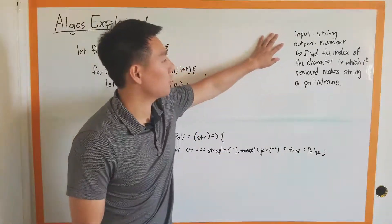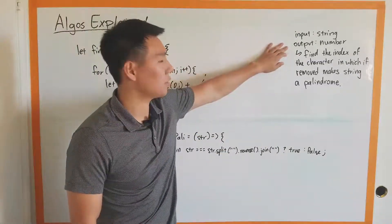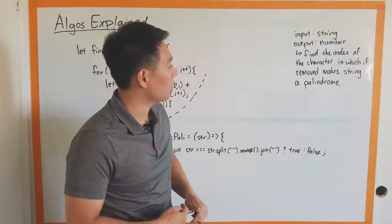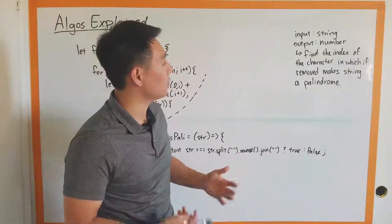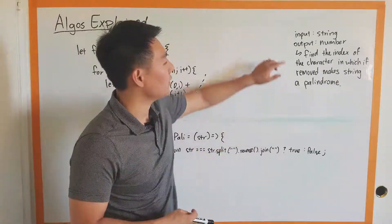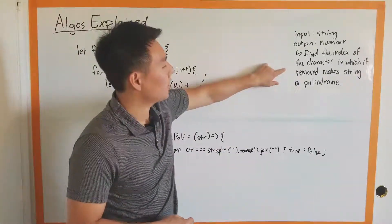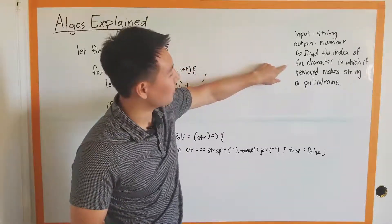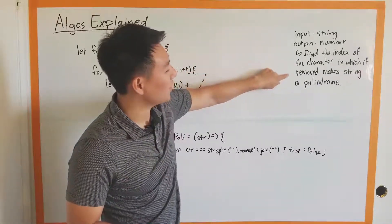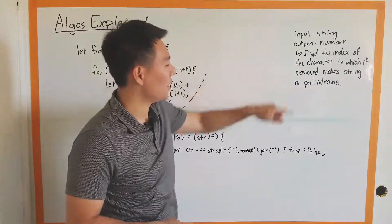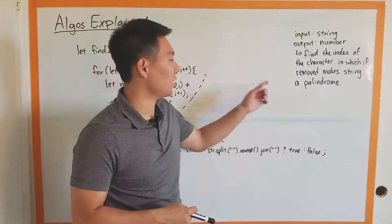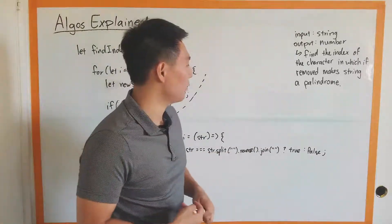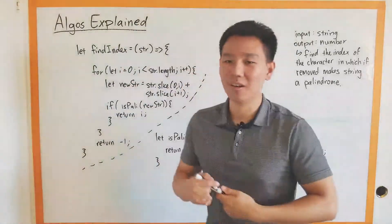The input is going to be a string and the output is going to be a number. What they want us to do is find the index of the character which, if removed, makes the string a palindrome.